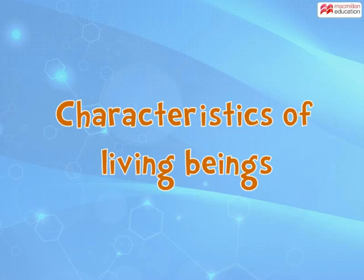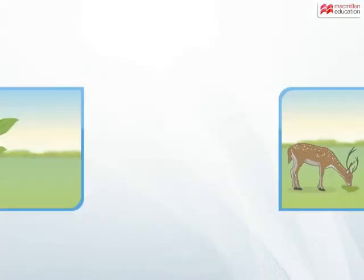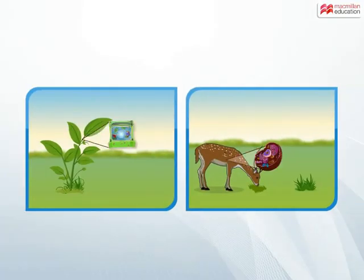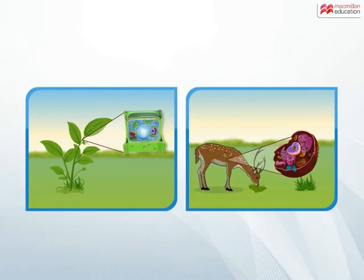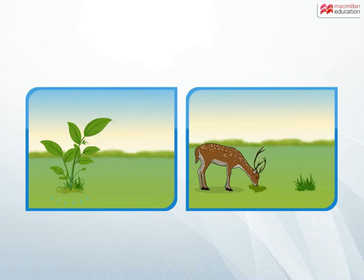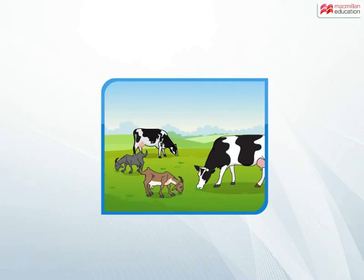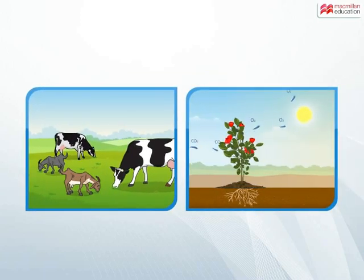Characteristics of Living Beings. All living things are made up of cells and require food and water to live. Animals depend on other animals or plants for food, while plants make their own food.